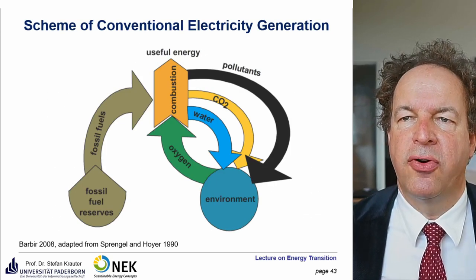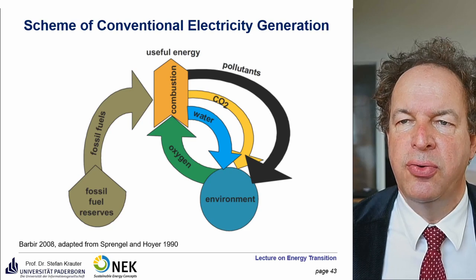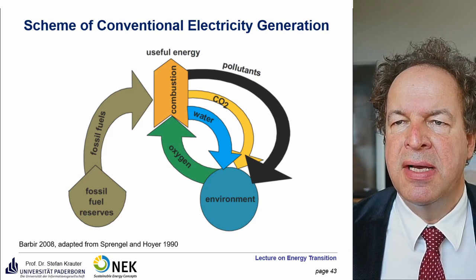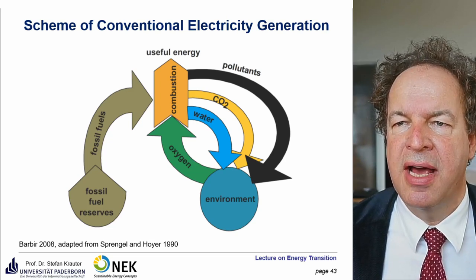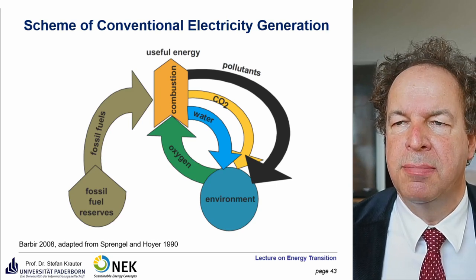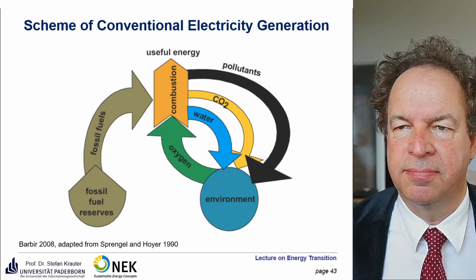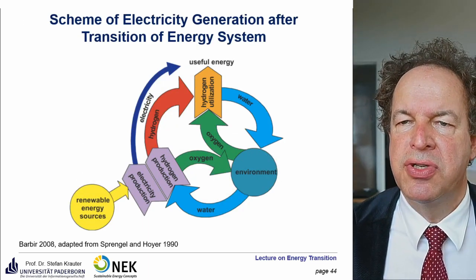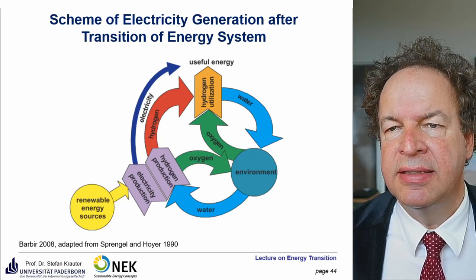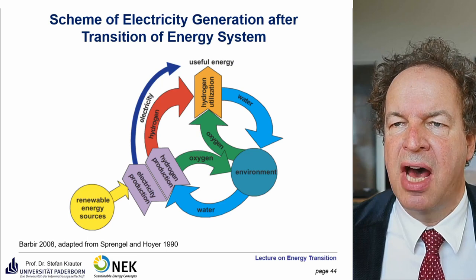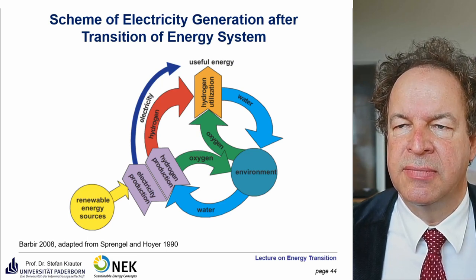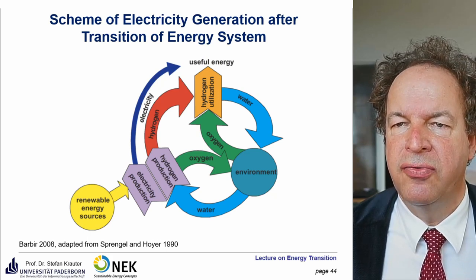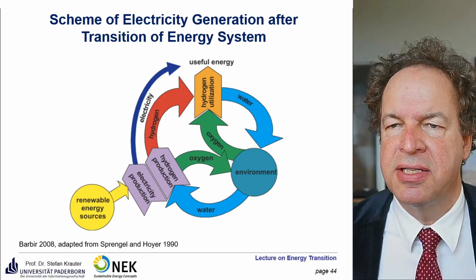Here we see the scheme of conventional energy generation. Fossil fuels enter a combustion chamber; we use oxygen to oxidize them. Then we have pollutants — carbon dioxide and water — which are released into the environment. If we have sustainable use of energy, we use renewable resources and generate electricity without that heavy environmental impact. Thinking in a cycle and looking at what's left over, if we think sustainably, there is not much left.